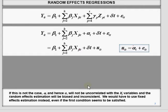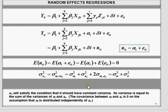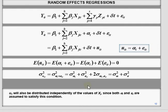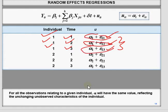Another complication in the random effect model is that you have a compound error term, so you can have autocorrelation for one individual over time, and that will lead to biased standard errors of the coefficients. For example, for individual 1 over time periods 1, 2, and 3, the epsilon terms are independent of each other. But when alpha_1 is added to each, they become correlated over time. The same is the case for individual 2, individual 3, and so on.